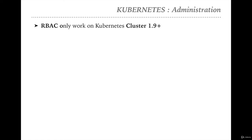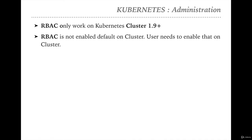Before using RBAC in your production or test environment, make sure you are using Kubernetes cluster 1.9 or higher. RBAC is not enabled by default on the cluster, whether you've started it on GCP, AWS, or Minikube. You can verify RBAC status using the command 'kubectl api-versions'. This command lists all APIs enabled in your cluster. If you see 'rbac.authorization.k8s.io', RBAC is enabled. If not, you need to enable it.